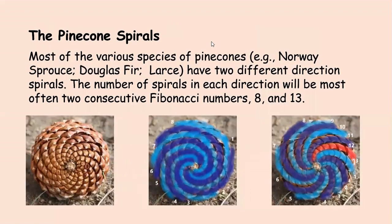Now let's see a little bit about pinecone spirals. Most species of pinecones — for example, Norway Spruce, Douglas Fir, and Larch — have two different directions of spirals. The number of spirals in each direction will most often be two consecutive Fibonacci numbers: 8 and 13. If we look at these images, they are all the same pinecone. I've colored the spirals for you to see. The image in the middle shows the left-oriented spirals — you can see there are eight of them. And in the image at the very right, there are 13 right-oriented spirals.